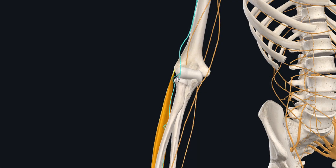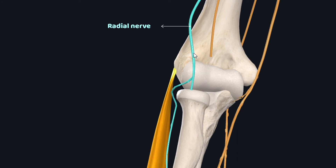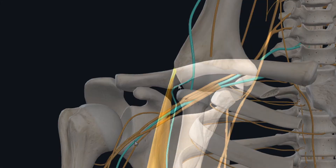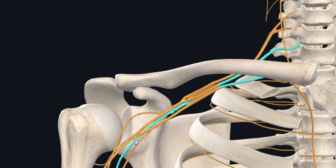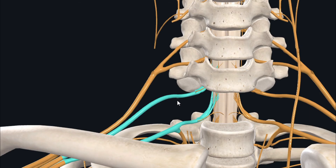The extensor digitorum muscle receives its innervation from the deep branch of the radial nerve. This is the radial nerve, and this is the deep branch which supplies the extensor digitorum muscle. The radial nerve arises from the posterior cord of the brachial plexus. The nerve roots involved are the anterior rami of the 7th and 8th cervical spinal nerves.